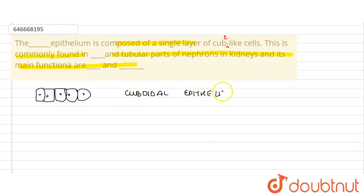Cuboidal epithelium is found in the glands. It is found in the ducts of the glands. If they are found in the ducts of the glands, then the main function will be, yes of course, secretion.